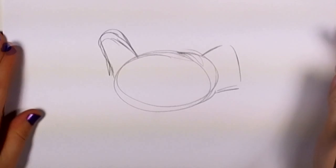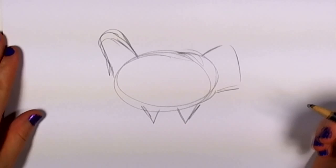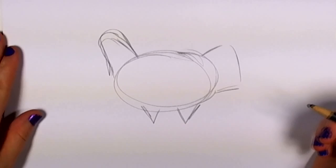Next, you're going to draw the legs. Draw two upside-down triangles attached to the oval. And for the toes, they're just going to be four straight lines, three of them pointing forward and one of them pointing back.